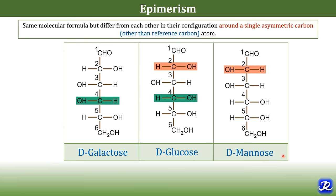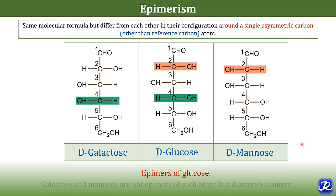The structure of D-mannose is the same as D-glucose except at carbon number 2. In D-glucose the hydroxyl group at carbon 2 is on the right side, while in D-mannose it is on the left side. Since the difference is at carbon number 2 — an asymmetric carbon other than the reference carbon — D-mannose is the second epimer of glucose. So both galactose and mannose are epimers of glucose, but galactose and mannose are not epimers of each other — they are called diastereoisomers.